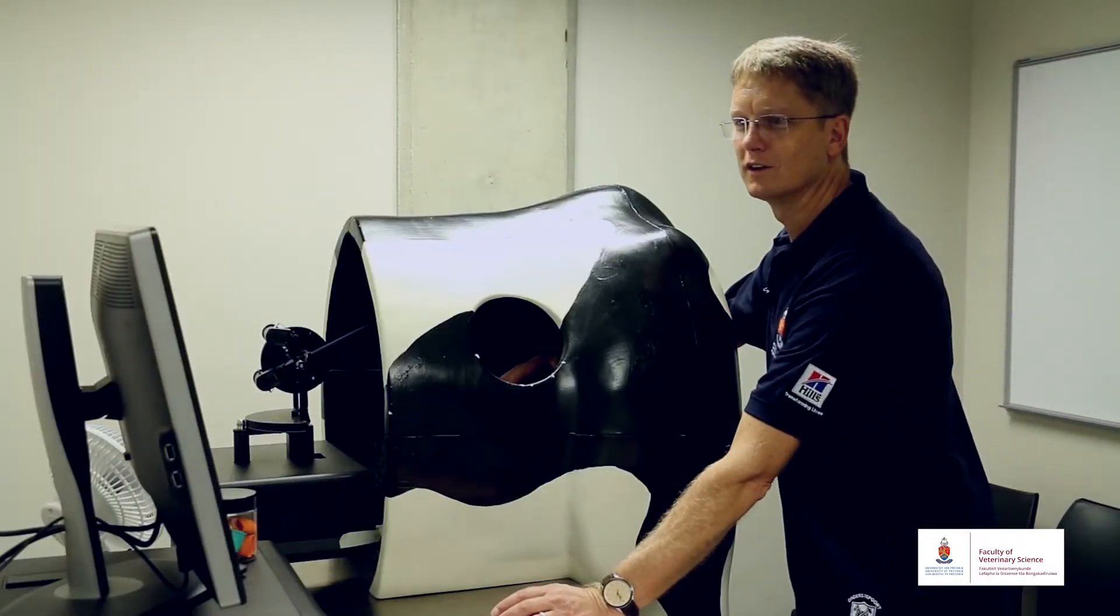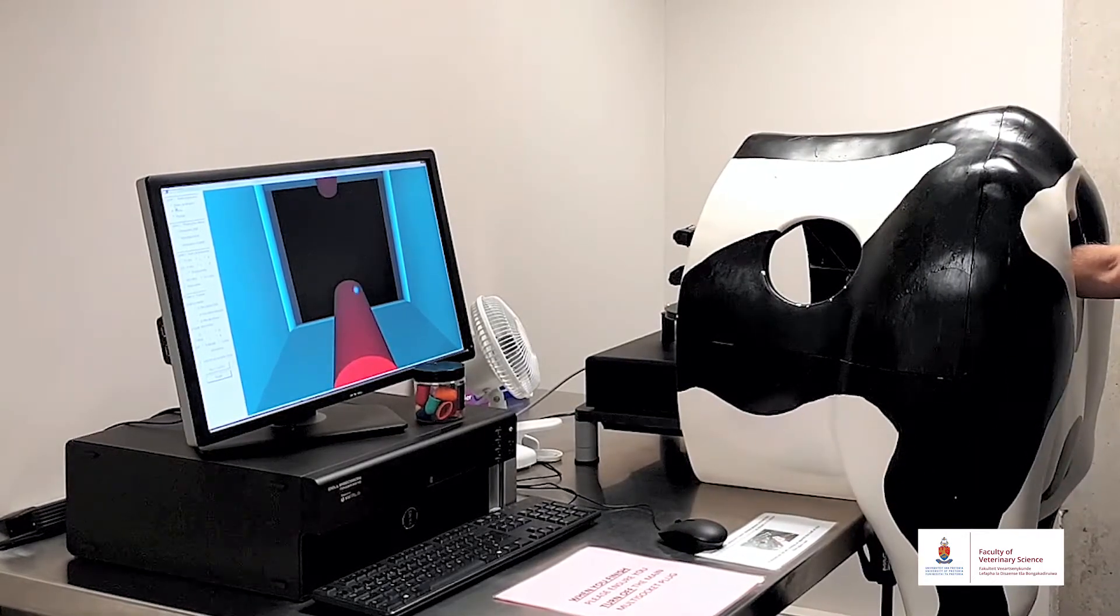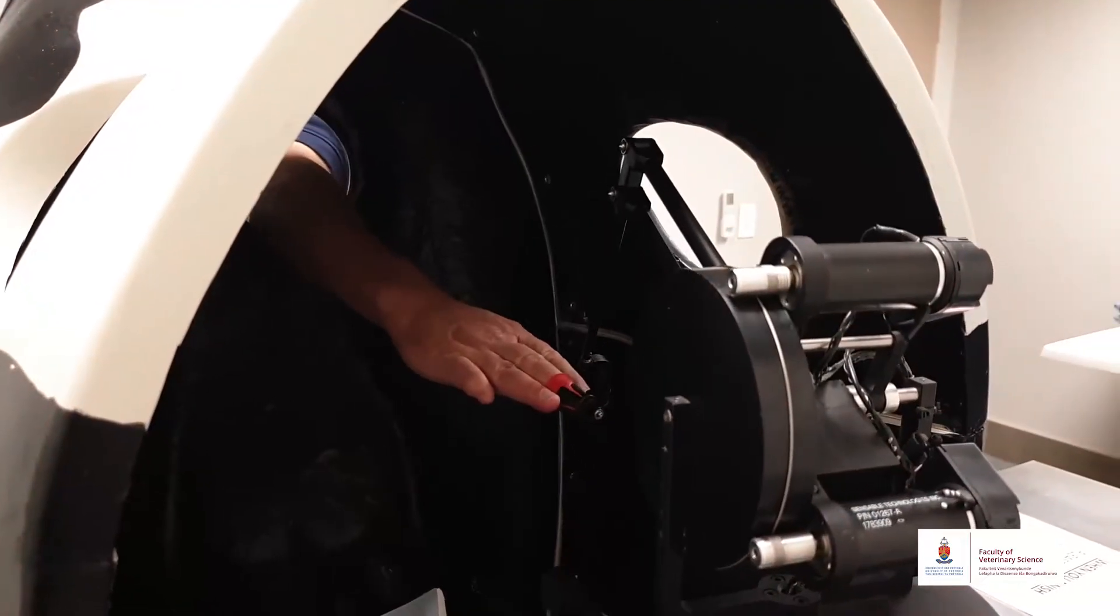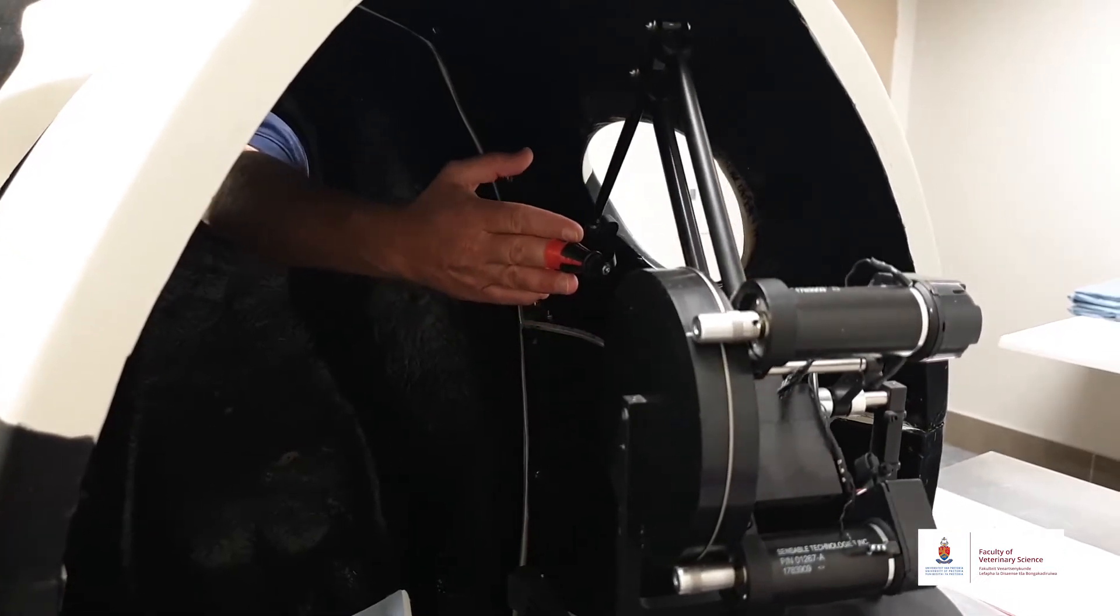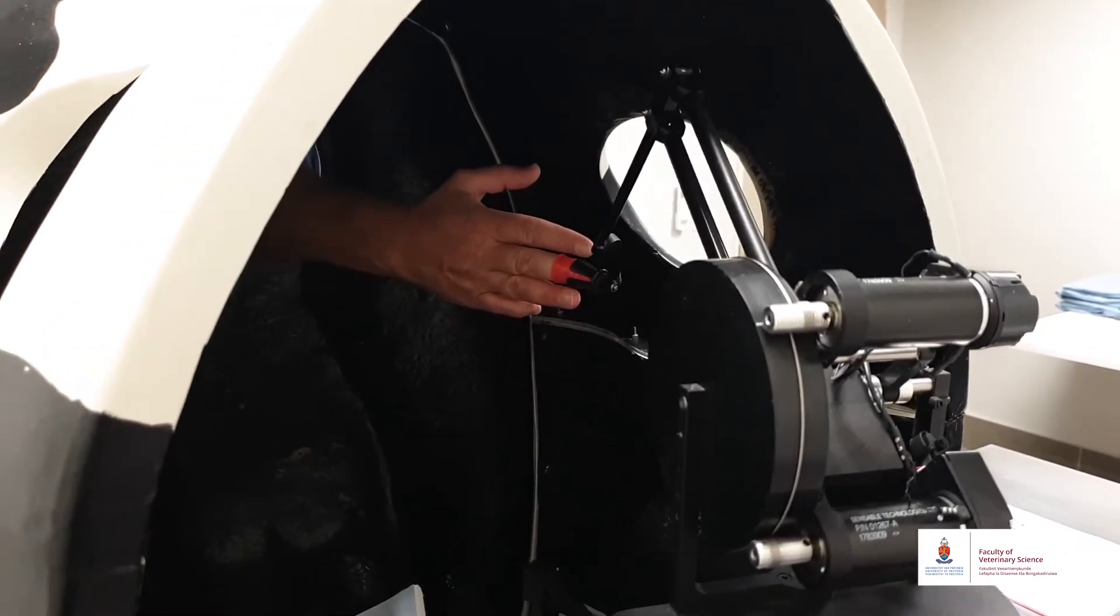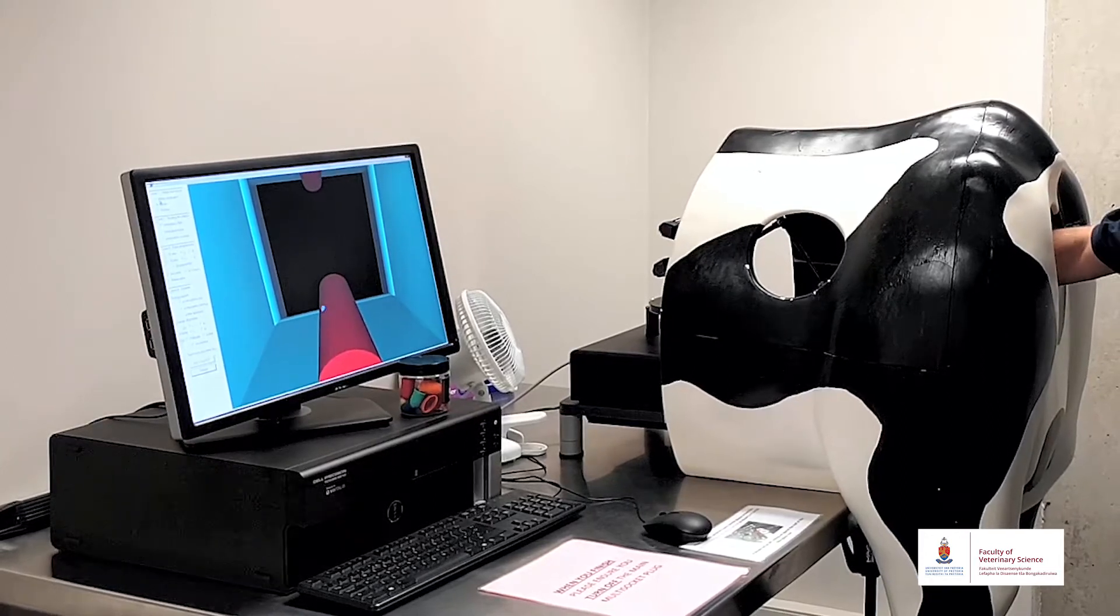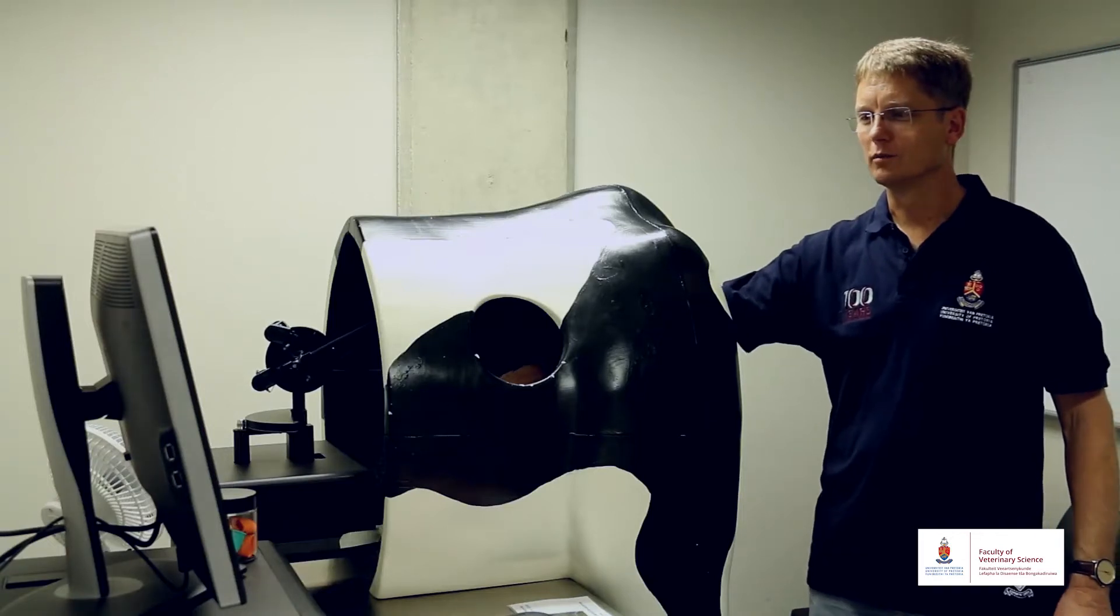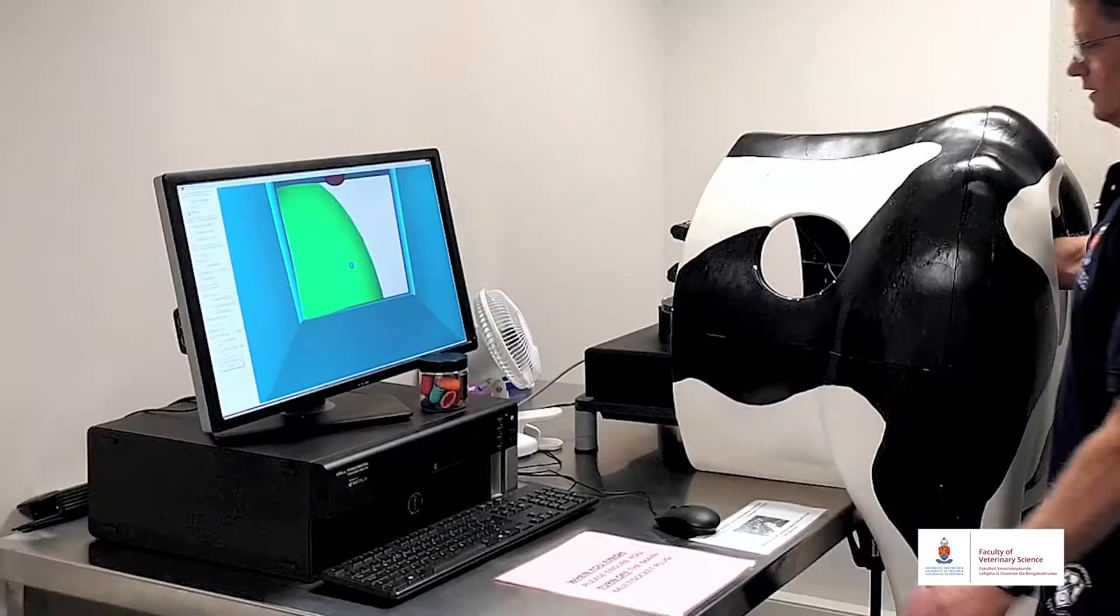Then I go to the next level here which is the cervix, the start of the female reproductive tract. Now the machine will guide my hand and will teach me where the cervix is in relation to the pelvis of the animal. When I go to a real animal I've already familiarized myself with where to find the structures.